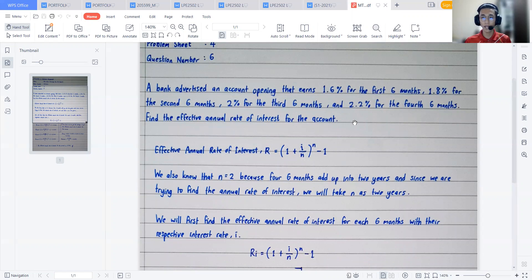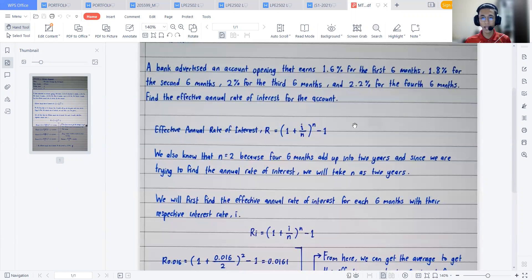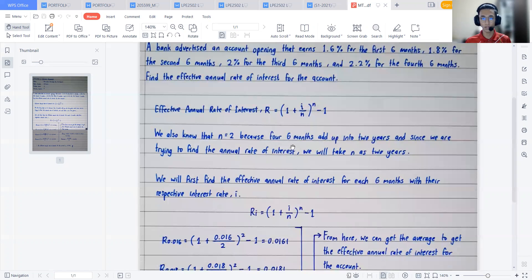We also know from the question there are four six-month periods. So that means when we add all of them together, that will add up into two years. So n is equals to 2, because this question wanted us to find the annual rate of interest. N is equal to 2 because four months add up into two years.